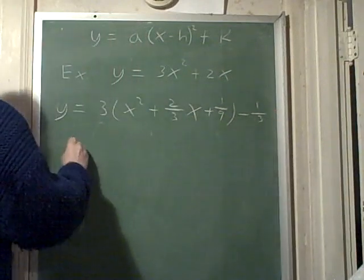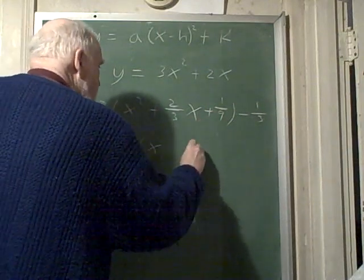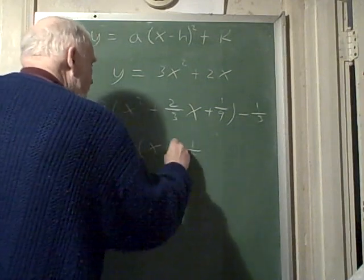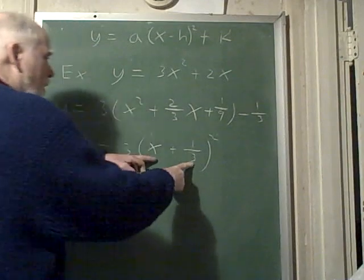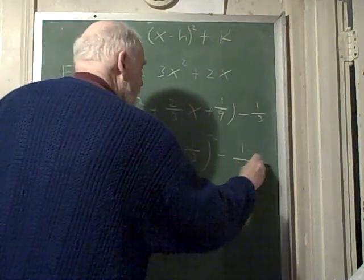So I end up with y equals 3 times x plus 1 third squared. If you square that out you'll end up with that expression, this trinomial, minus 1 third.